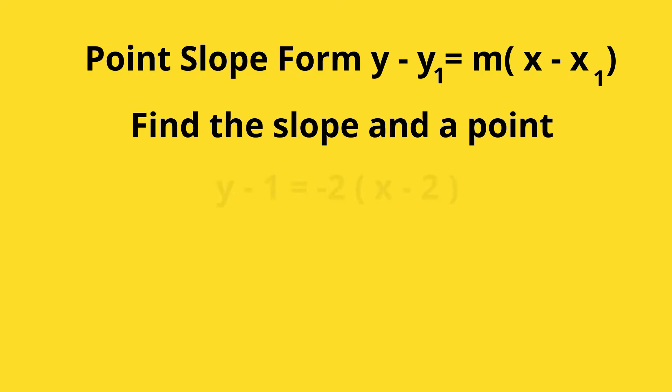You have y minus 1 equals negative 2 times x minus 2. The slope is negative 2. Now, what about the x? You have a negative 2, and here's one thing: the number will be opposite because you have to get rid of the negative sign. So the x will be 2 and the y will be 1.